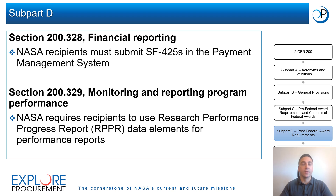To ensure that recipients are achieving their award goals and expending federal funds appropriately, recipients must adhere to post-award reporting requirements in Subpart D. Per Section 200.328, agencies must require recipients to submit financial reports, known as Standard Form SF-425. NASA requires all recipients to submit their SF-425s in the U.S. Department of Health and Human Services Payment Management System, or PMS. Per Section 200.329, NASA requires all award recipients to utilize the Research Performance Progress Report, or RPPR, data elements for performance reports.